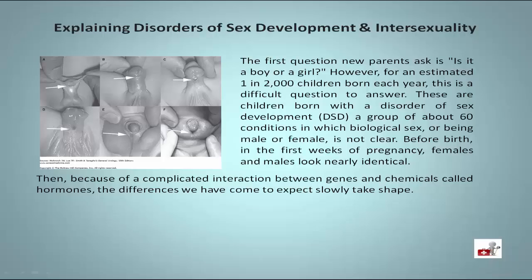Disorders of Sex Development and Intersexuality. The first question new parents ask is: is it a boy or a girl? However, for an estimated 1 in 2,000 children born each year, this is a difficult question to answer. These are children born with a Disorder of Sex Development, a group of about 60 conditions in which biological sex, or being male or female, is not clear.